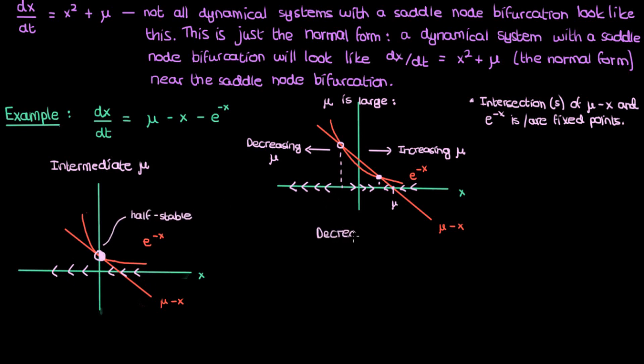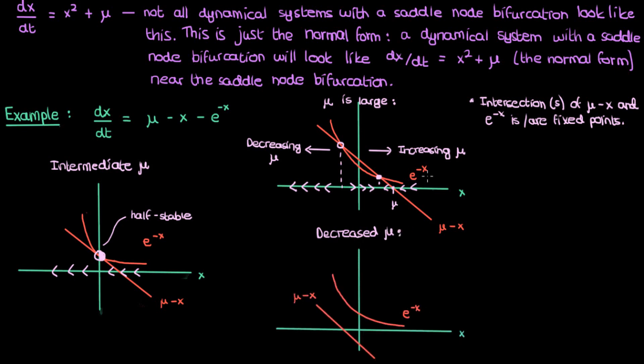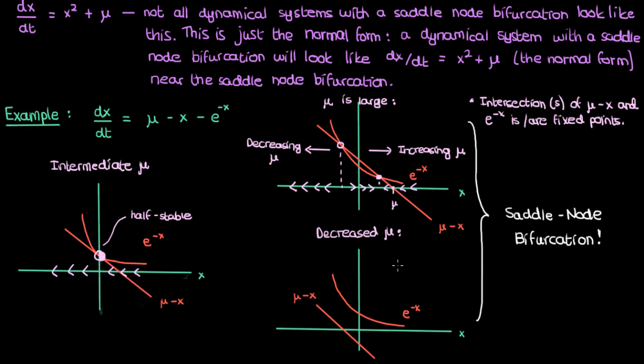If I decrease μ even further and shift the line further left, there are no intersections and therefore no fixed points. So we've gone from two fixed points to one half-stable fixed point to no fixed points just by decreasing μ. This transition in the characteristics of the dynamical system is a saddle-node bifurcation — two fixed points appearing from nothing or vanishing into nothing depending on how you change μ.